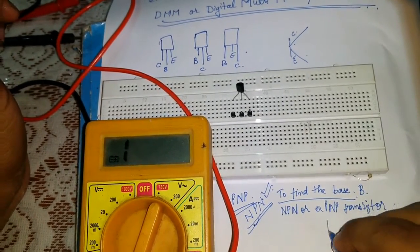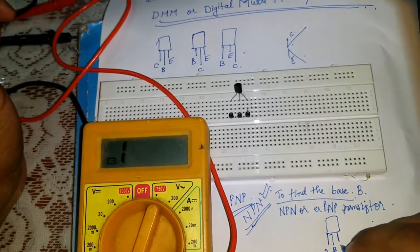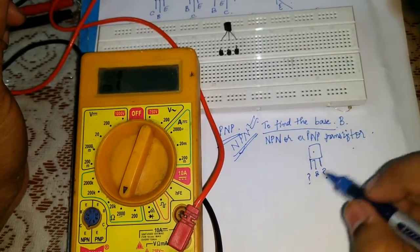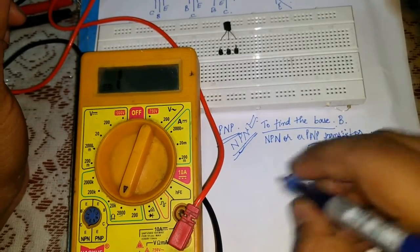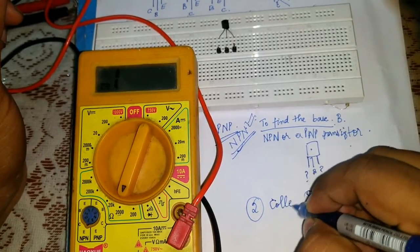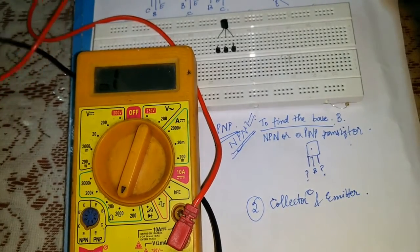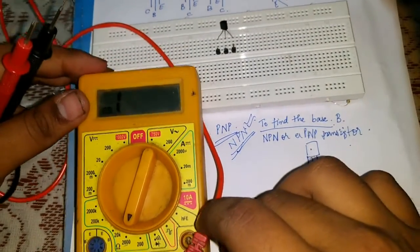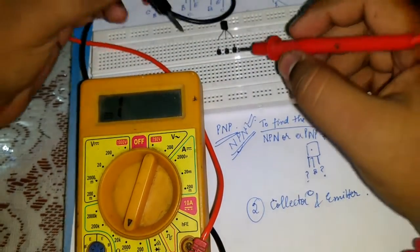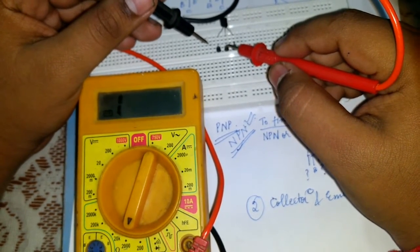If I draw the diagram, this is our base. But still these two terminals are unknown. Now, how to find collector and emitter. See, our second step would be how to find collector and emitter. Well, this step is very simple. The thing we have to do is that we will keep the red pin in the base part if it's an NPN transistor, and the black pin if it is a PNP transistor.